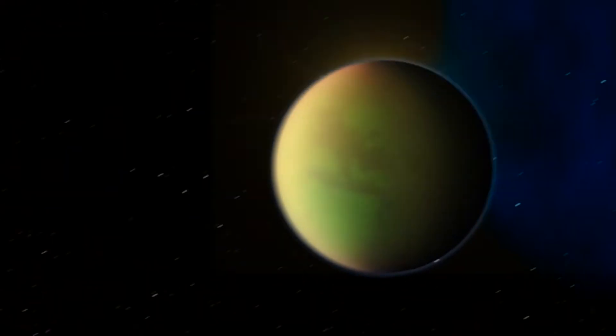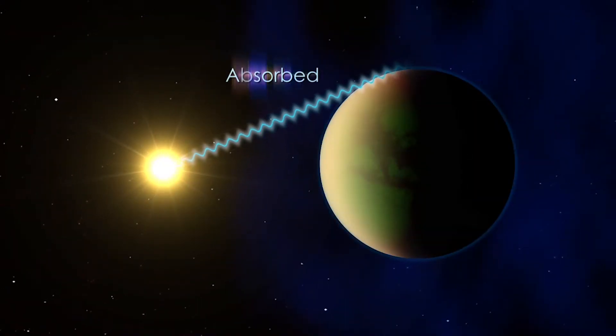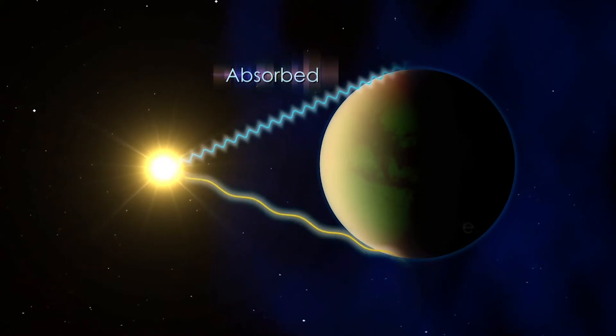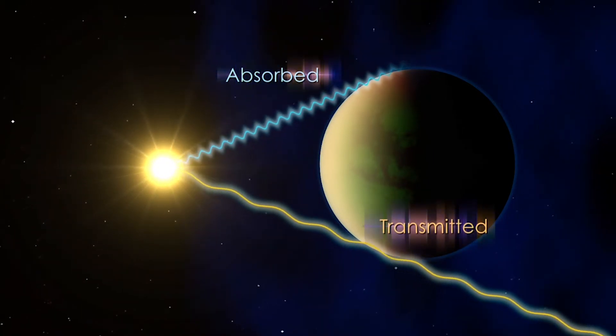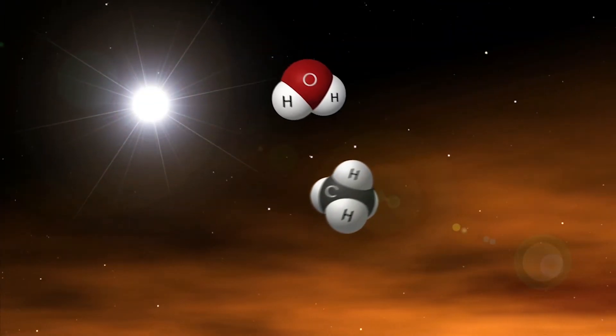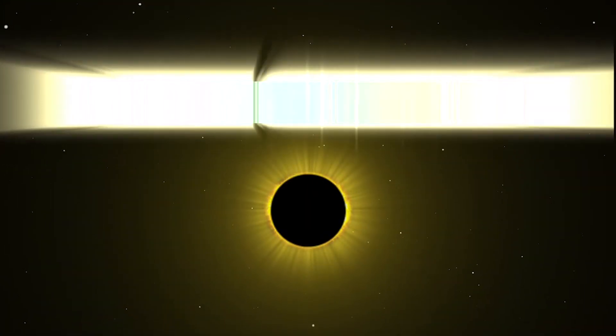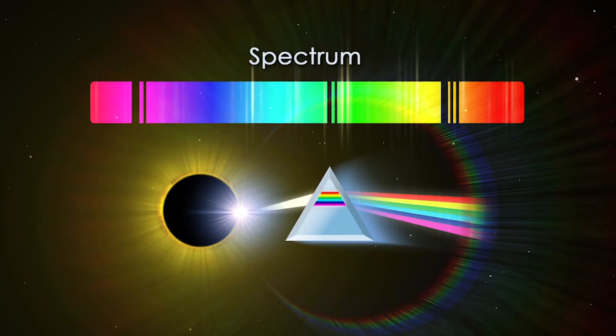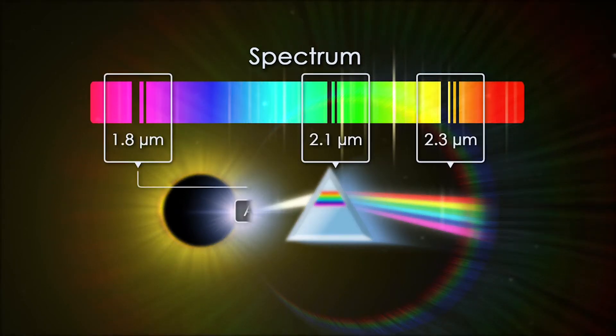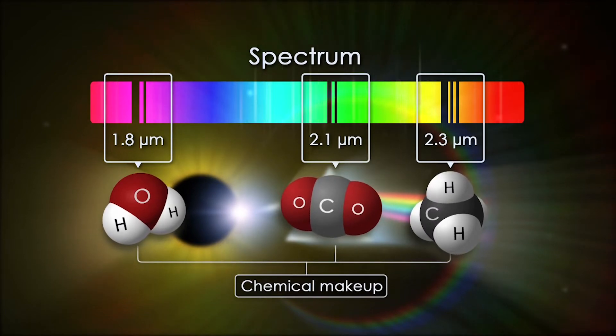As the planet crosses its star, its atmosphere absorbs certain wavelengths of light, or colors, while allowing other wavelengths to pass through. Because each molecule absorbs distinct wavelengths, astronomers spread the star's light into its spectrum of colors to see which wavelengths have been absorbed. The dark absorption bands act as molecular fingerprints, revealing the atmosphere's chemical makeup.